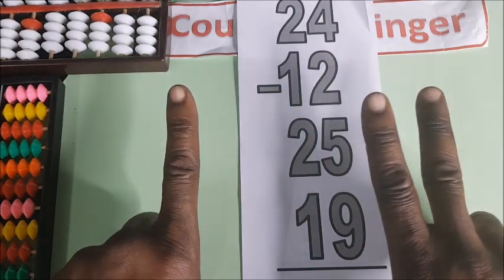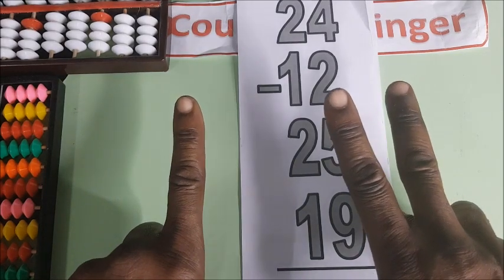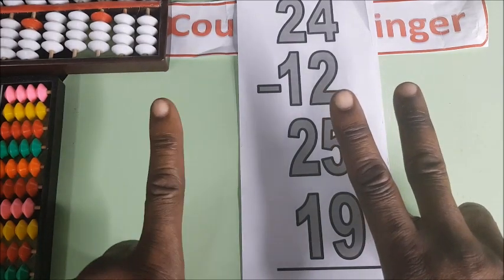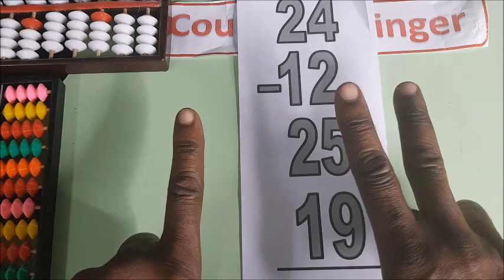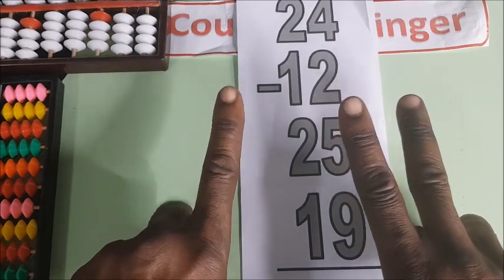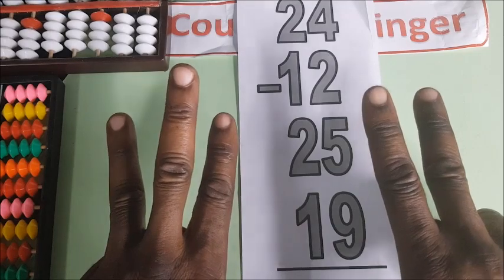1, 2. So 24 minus 12 is 12 - 10 and 2. 12 plus 25, plus 25, 10, 20, and plus 5.